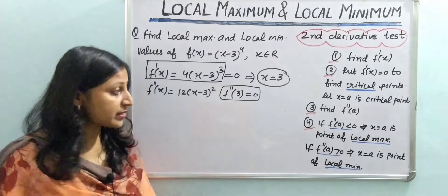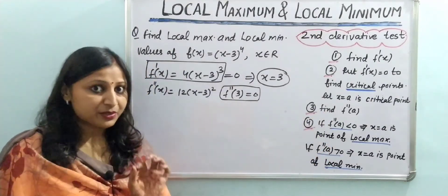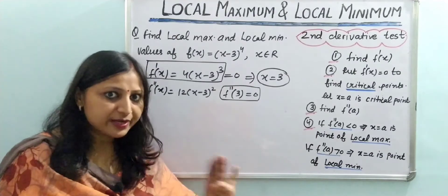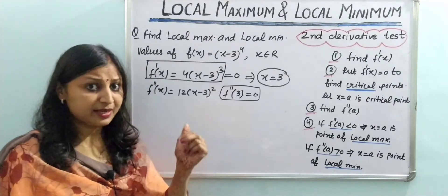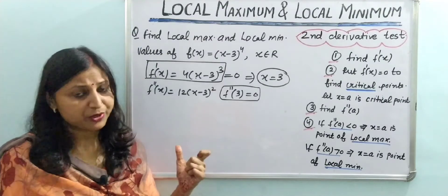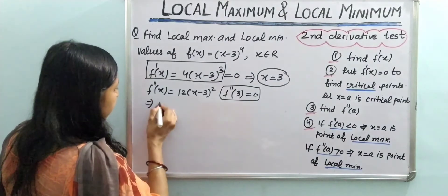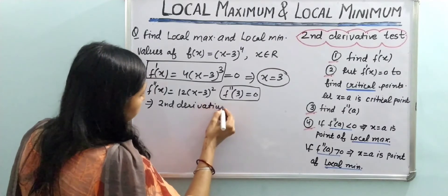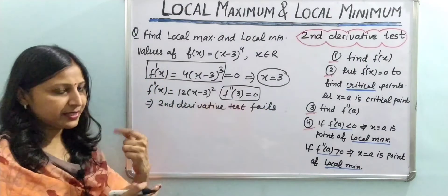Since the second derivative value at the critical point is neither negative nor positive but zero, the second derivative test will fail. In this case, we have to shift to the first derivative test to check whether this point is a point of local maximum, local minimum, or a point of inflection.